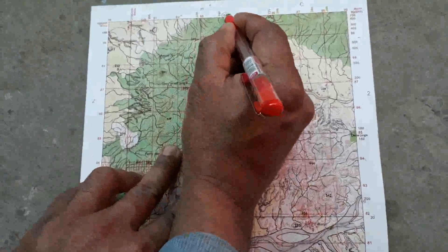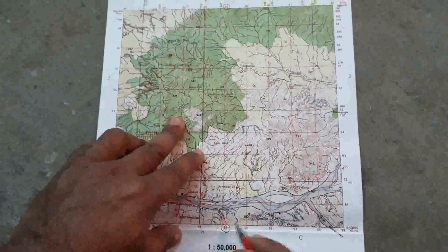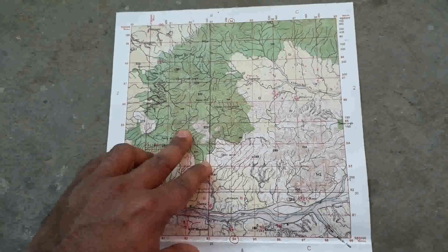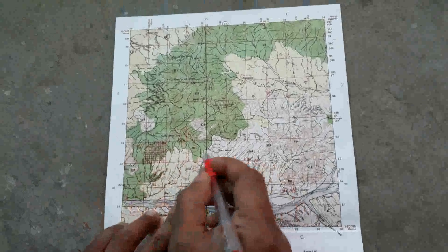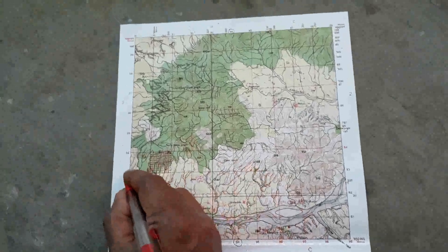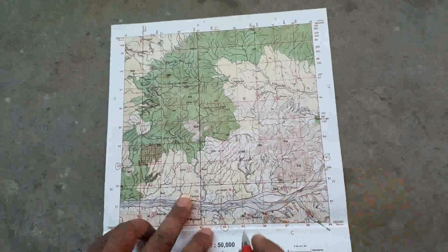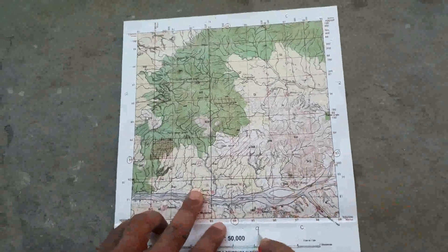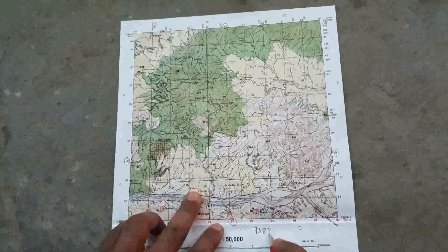4-figure grid reference contains 4 numbers. The first 2 numbers are called the Easting, which is the number you would look for at the bottom of the map. The second 2 numbers are called the Northing and represent the numbers you would look for on the side of the map. Where these two sets of numbers intersect is the bottom left corner of the square where you would find what you are looking for.